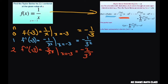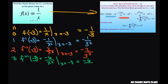Let's do the third term — or the fourth term actually. So that's the triple prime at negative 3. This is negative 6 divided by x to the power of 4, and we're evaluating at x equals negative 3. This equals negative 6 divided by 3 to the fourth power.